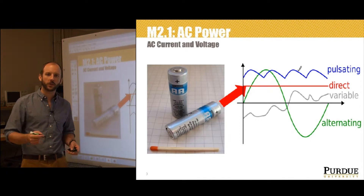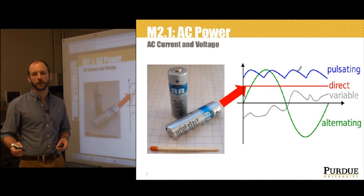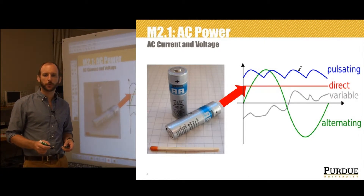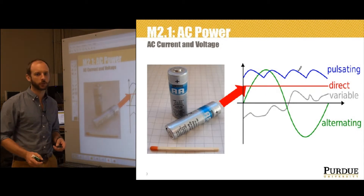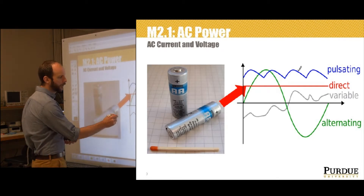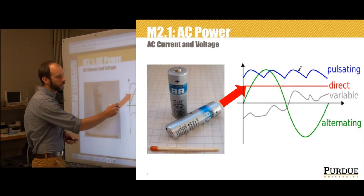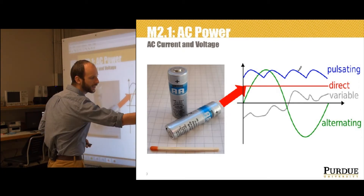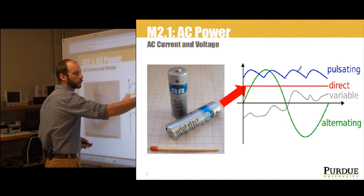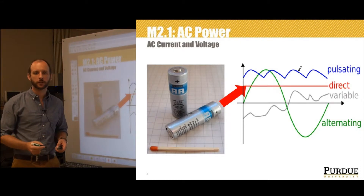In previous courses we've already dealt with direct current, or DC systems, in which the voltage polarity always remains the same, with the voltage potential always being positive on one side and negative on the other side, with current always flowing in the same direction — for example, as provided by a AA battery. We've got some AA batteries here; these are 1.5 volt DC batteries. You can see we use this red arrow to indicate that the voltage level never changes. No matter when in time I measure the voltage level, it's constant — it's a direct voltage — and therefore the current flow is always in one direction, and we call that a DC system.